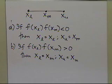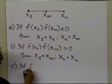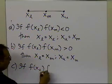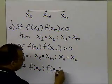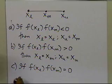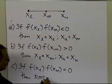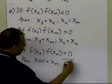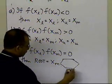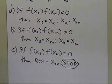The third possibility, which is purely a coincidence and happens very rarely, is that f(xl) times f(xm) is exactly equal to 0. In that case, we know the root has been found exactly — the root is xm — and you stop the whole process because you don't need to go any further.